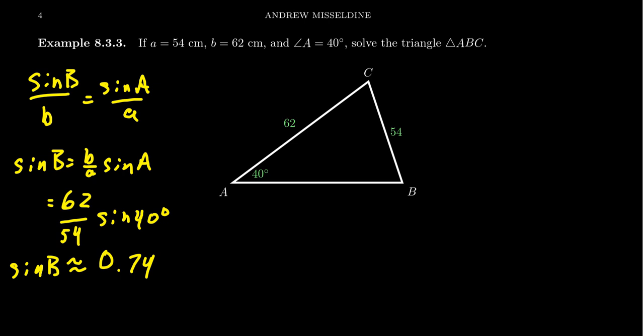This is a critical step when working with the ambiguous case — you must check whether this is an acceptable sine ratio. Remember that sin(B), like any sine function, must be between negative one and one. Since 0.74 falls inside that range, there will be a solution to this triangle and we can proceed.